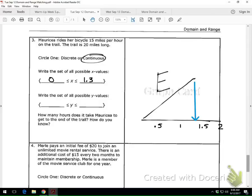Alright, so there we write all our possible Y values. Start with zero, and what do we do from there? What's our number? 20. Now, it says, how many hours does it take Maricia to get to the end of the trail? How do you know? How many hours does it take her to finish the whole trail? 1.3. 1.3 hours.